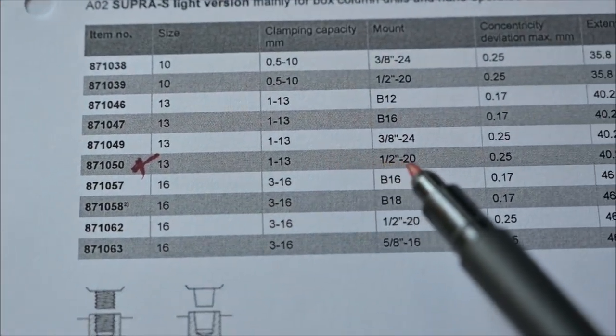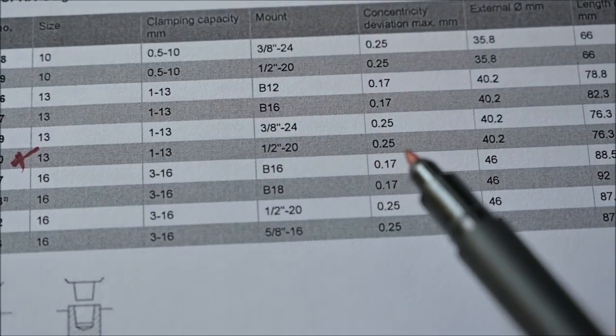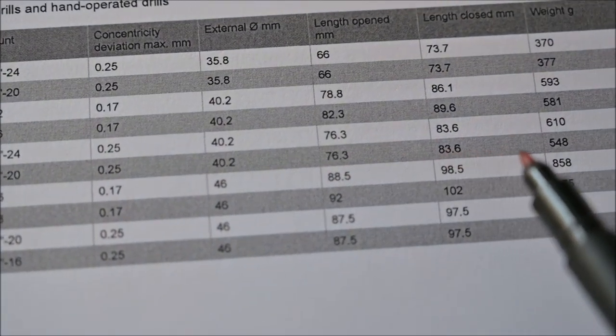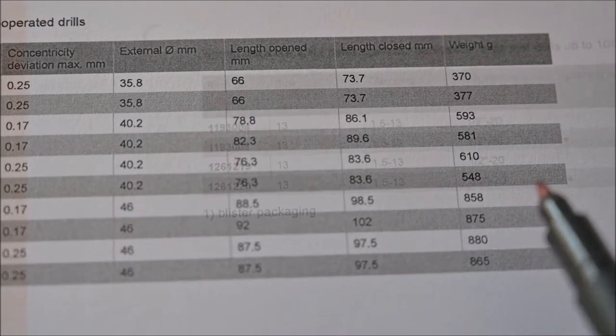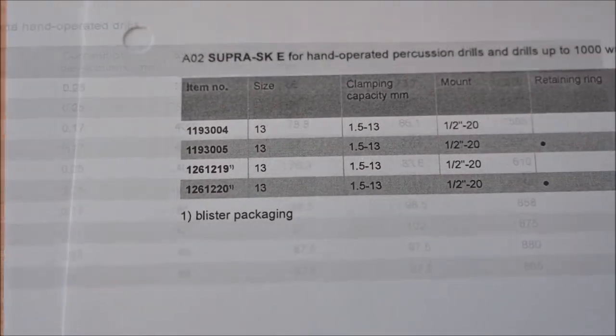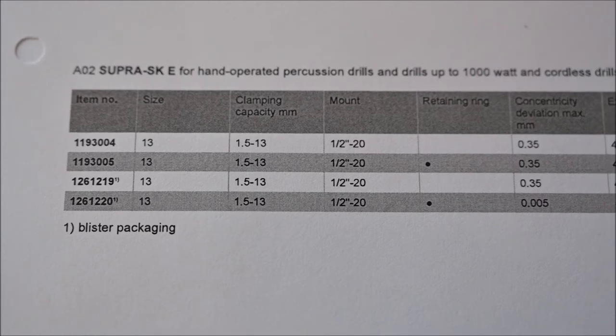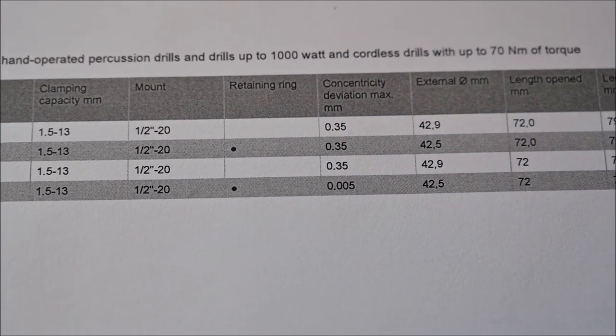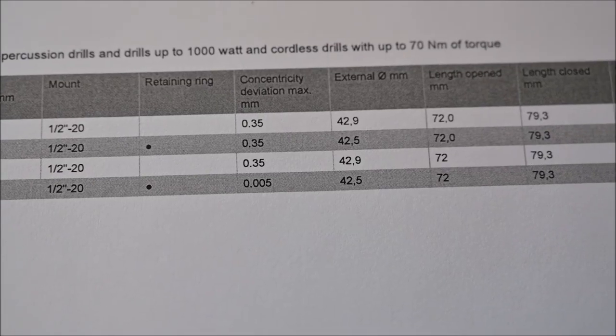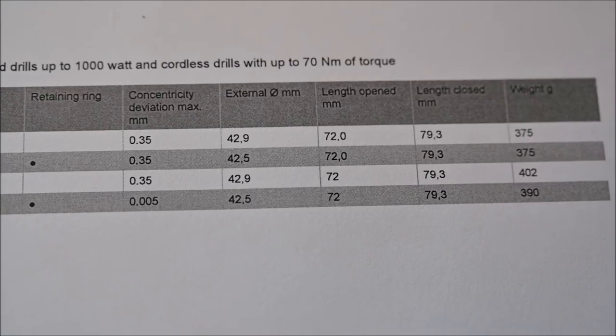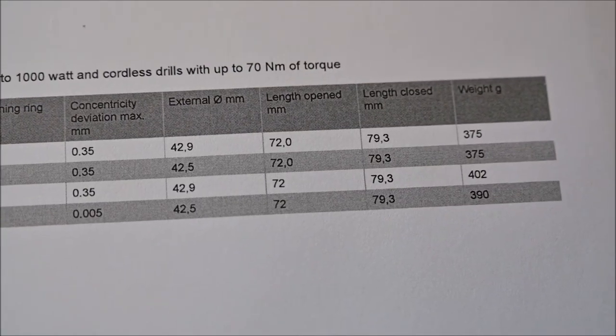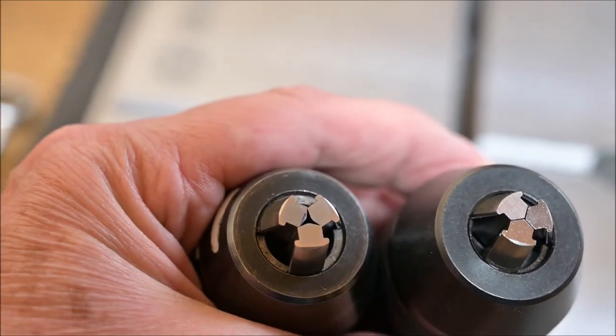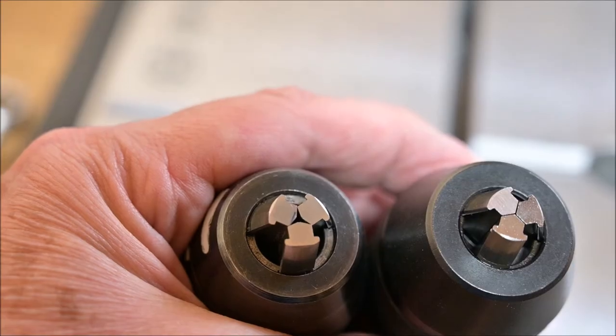The parameters of the new chuck are much better than the old one. It takes drills from 1 millimeter to 13 millimeter, which already is a quality indicator, as well as the run-out is much less on this one. The old one on the left, of course, and the new one on the right.